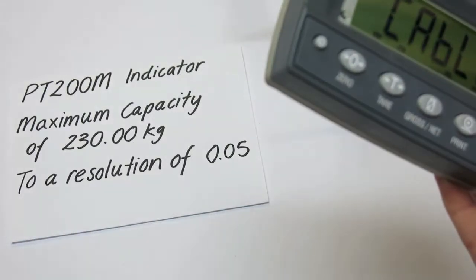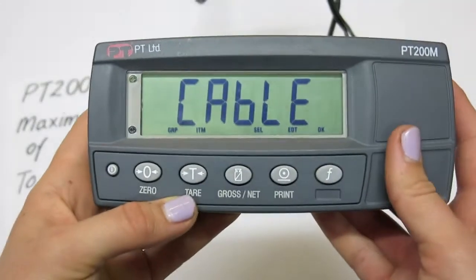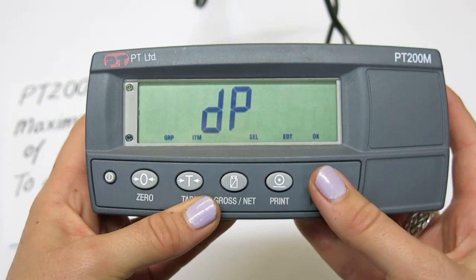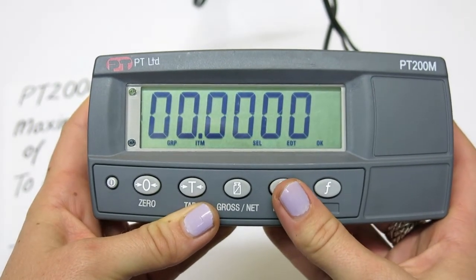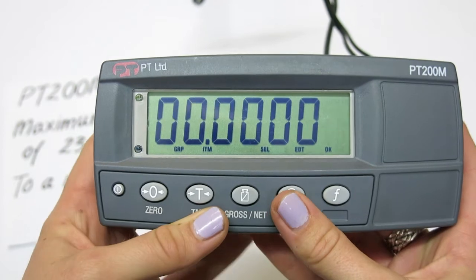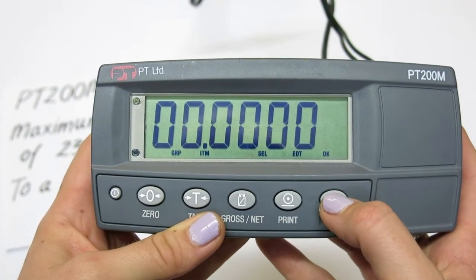For this example, two decimal places have been specified. Select OK to enter the option. Then use the edit button to scroll through the options and the F or OK button to select.